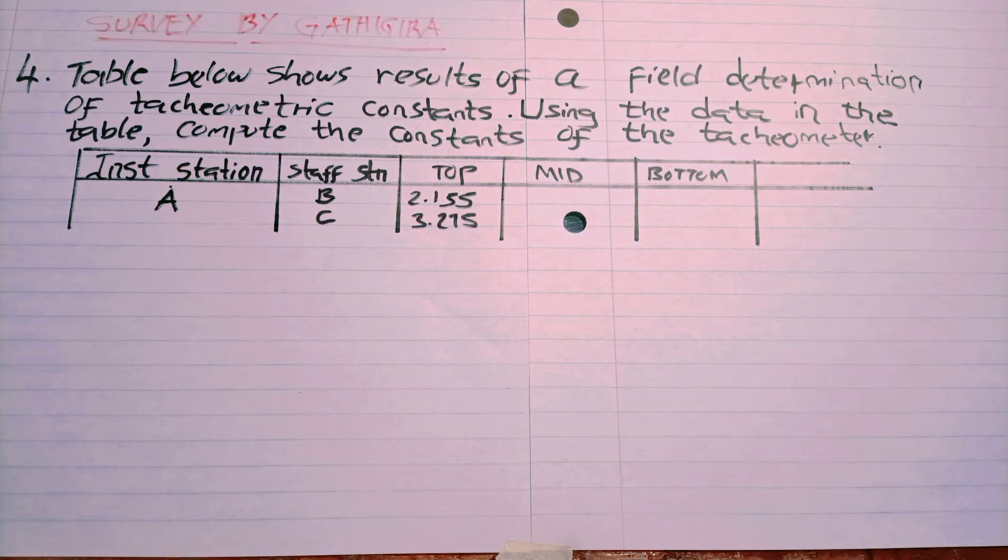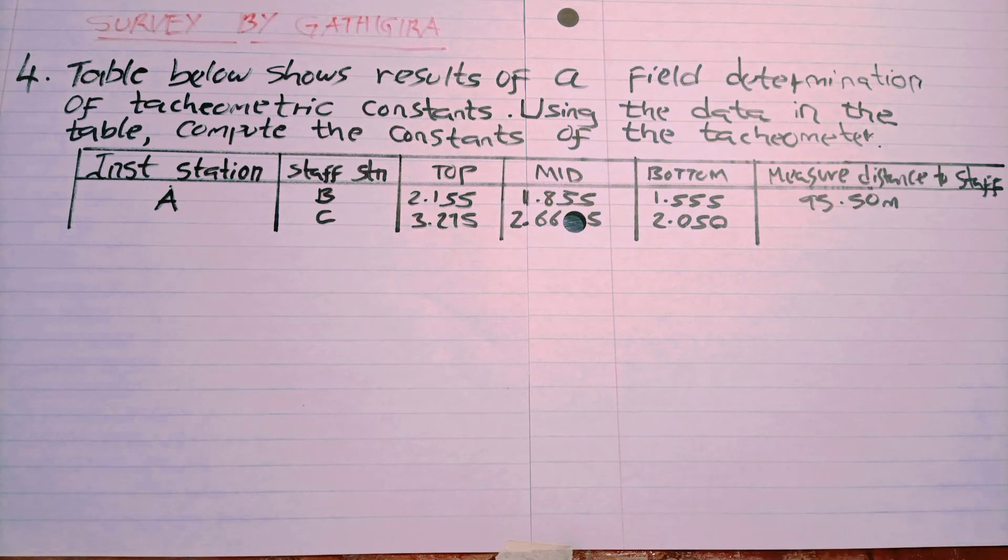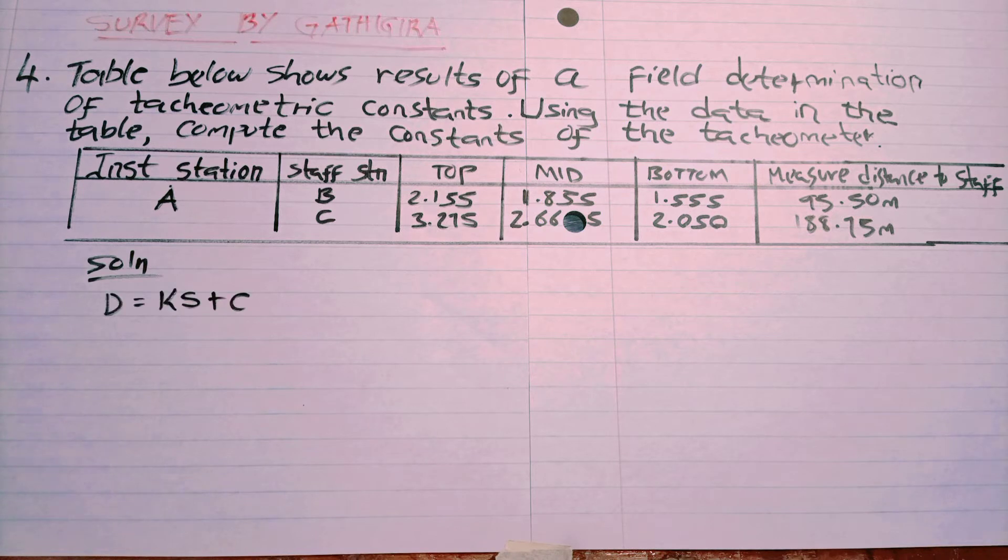The staff reading includes the top, middle, and bottom. Then the last will be the measured distance to the staff station solution.